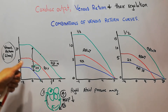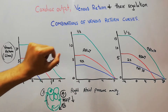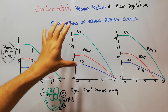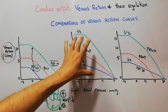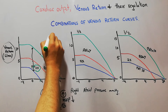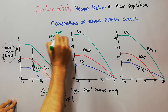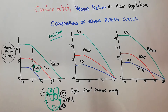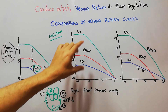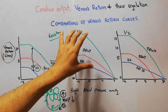This is the effect of mean systemic filling pressure on the venous return. The next graph shows the effect of venous resistance — or resistance to venous return — on the venous return curve.